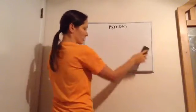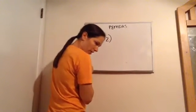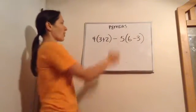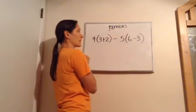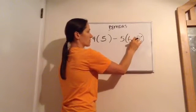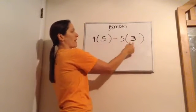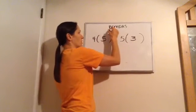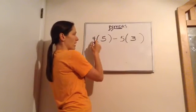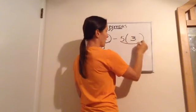Let's do a few more order of operations problems. We have 4 · (3 + 2) − 5 · (6 − 3). Following PEMDAS: do we have any parentheses? Yes — 3 + 2 = 5. Any more parentheses? Yes — 6 − 3 = 3. It's good to keep the parentheses because numbers next to each other means multiply. No exponents. Now multiply or divide left to right.